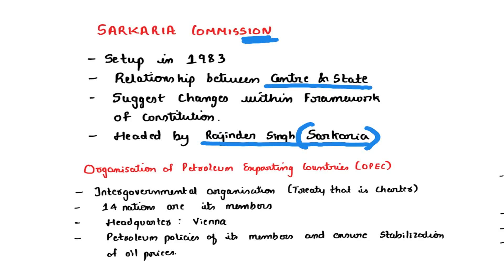OPEC stands for Organization of Petroleum Exporting Countries. It is an intergovernmental organization — intergovernmental organizations are governed by a treaty which acts as a charter for all member countries. OPEC has 14 nations as its members, and its headquarters is in Vienna.